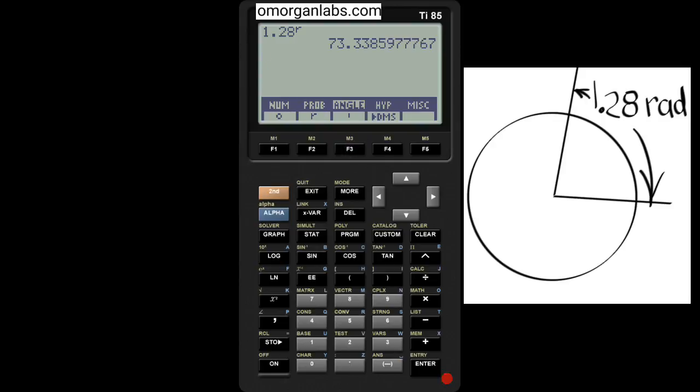Angle, second, answer, and then we push the degrees minutes seconds button, the DMS button, enter. So that is 73 degrees 20 minutes 18.952 seconds. Okay, hope you learned something. Omorganlabs.com.